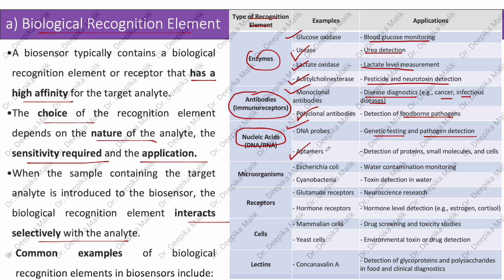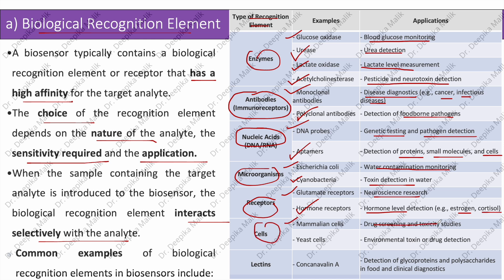Aptamers, which are single-stranded nucleic acid molecules that bind specifically to target molecules, can be used for detection of proteins, small molecules, and cells. Microorganisms such as E. coli can be used for water contamination monitoring, and cyanobacteria for toxin detection in water. Receptors such as glutamate receptors are used in neuroscience research, and hormone receptors for detecting hormone levels like estrogen or cortisol. Cells like mammalian cells are used for drug screening and toxicity studies, and yeast cells for environmental toxin or drug detection. Lectins such as concanavalin A are used for detection of glycoproteins and polysaccharides in food and clinical diagnostics.